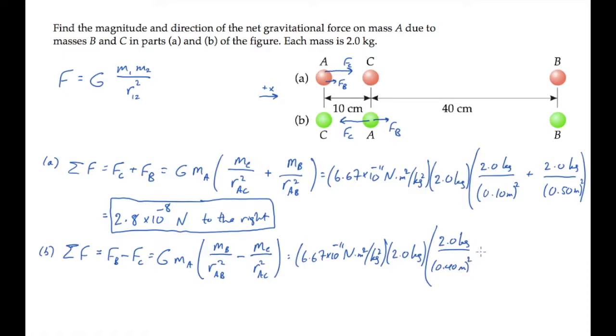After calculating, we see the net gravitational force on mass A is negative 2.5 times 10 to the minus 8 newtons. Its magnitude is 2.5 times 10 to the minus 8 newtons, and the negative sign tells us that the net force is directed to the left in the negative direction.